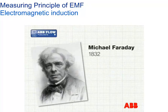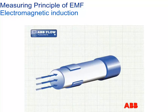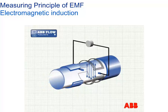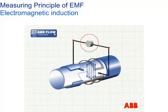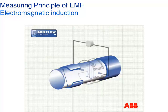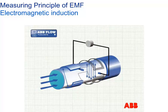Electromagnetic flow metering is based on the principles of Michael Faraday's 1832 discovery. When a conductive liquid, such as water, is moved through a magnetic field, a voltage is induced in the liquid at right angles to the magnetic field. The size of the voltage is directly proportional to the volume flow rate. This induced voltage is detected by sensors known as electrodes, which transfer the voltage signal to the processing electronics where it can be converted into a usable industrial standard signal. It is important that the flow meter tube is non-magnetic — austenitic stainless steel is the most commonly used material.